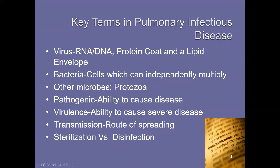Other microbes include protozoa, Rickettsia, and a host of others. Pathogenic refers to the ability to cause disease, as I referenced with van Leeuwenhoek. Virulence has to do with the ability to cause severe disease. Transmission refers to the route of spreading. Sterilization is the elimination of all microbial life, whereas disinfection is the removal or deactivation of vegetative microbial life. The key distinction is between spore formers and non-spore formers — non-spore formers are vegetative or living bacteria.